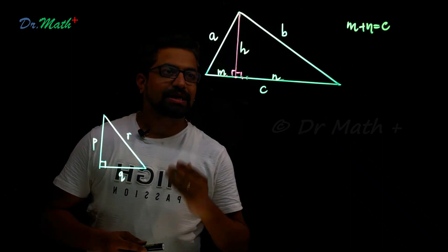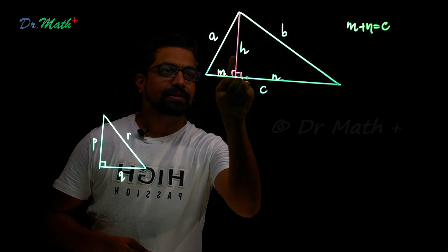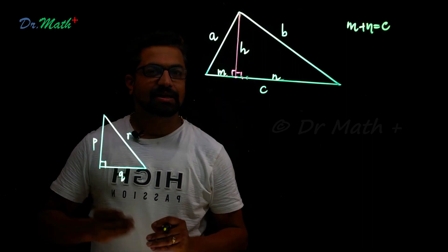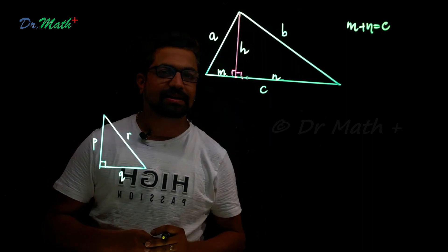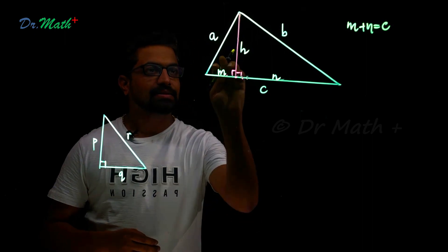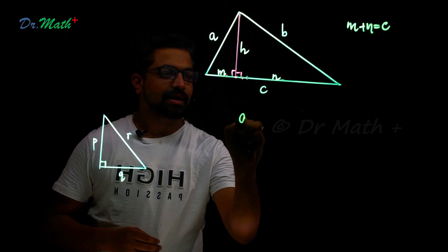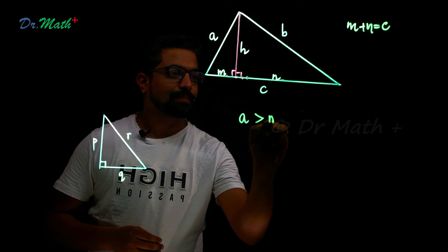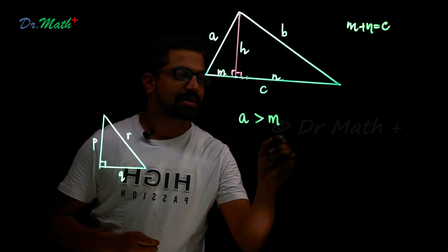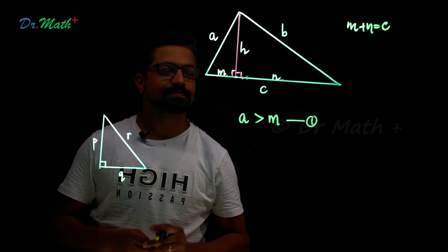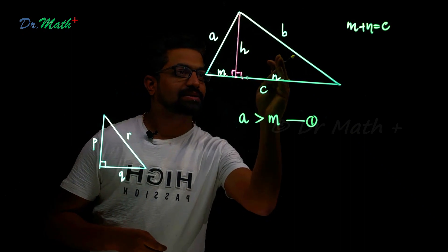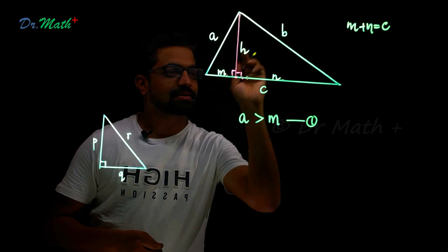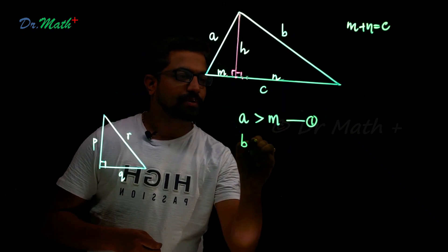Now you can very clearly see that there are two right angle triangles. So we have just learned that hypotenuse is the greatest side in a right angle triangle. In this right angle triangle, a is greater than m, and let's call this inequality as one.